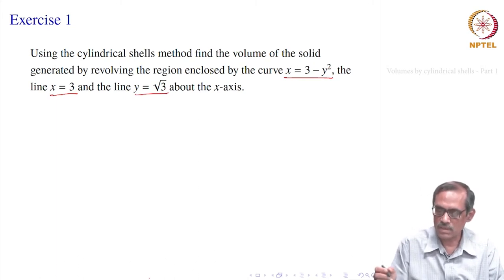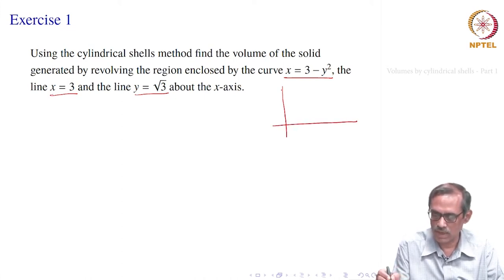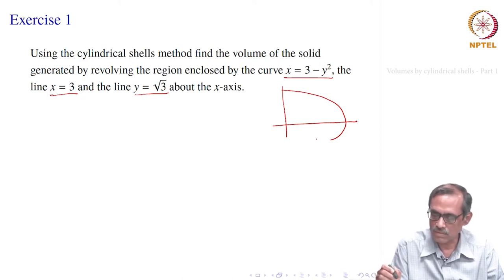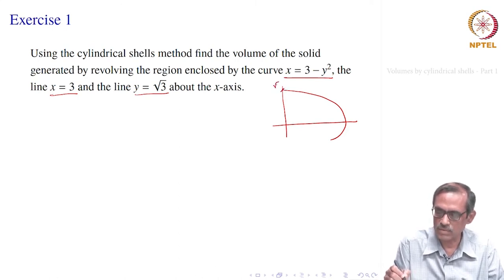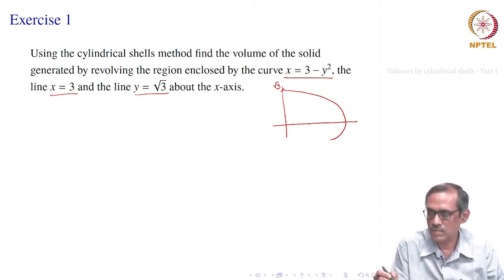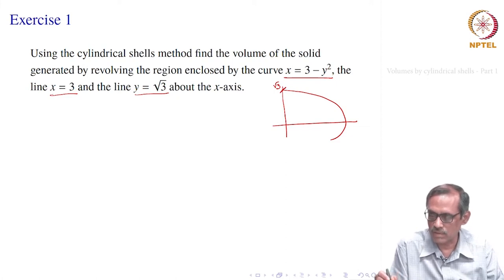So first, what is the region? We have x = 3 − y², which looks like a parabola. Where does it cross the x-axis? When x = 0, y is √3 on the top, and similarly −√3, but let us take one side only — in the first quadrant. So y is √3 here, and when y = 0, x = 3.